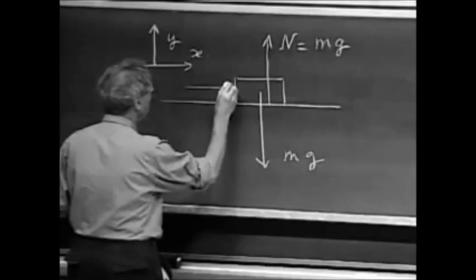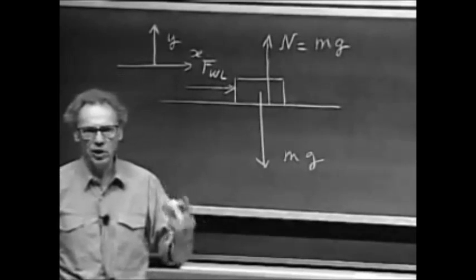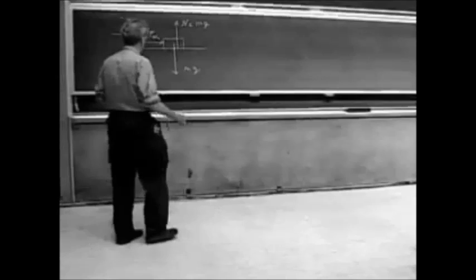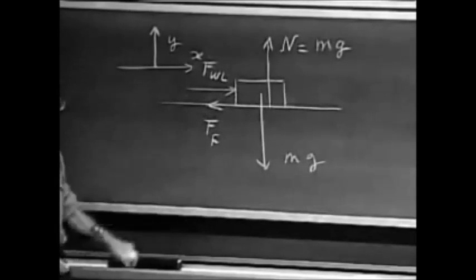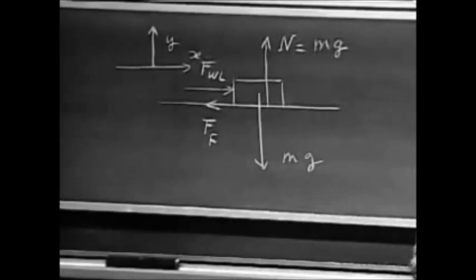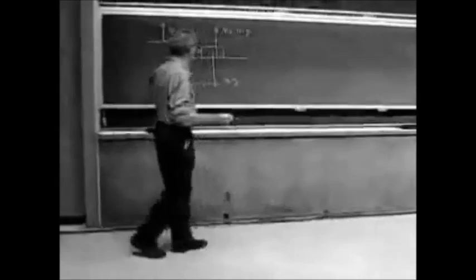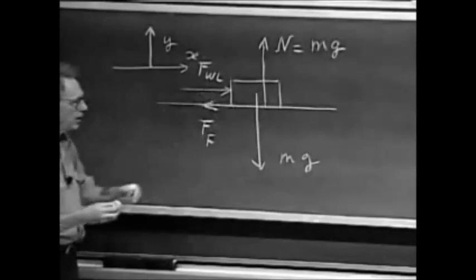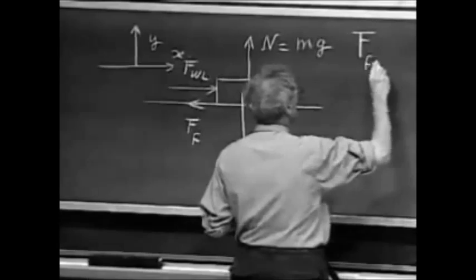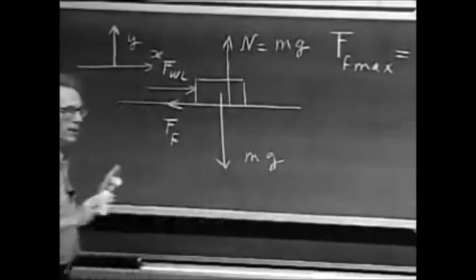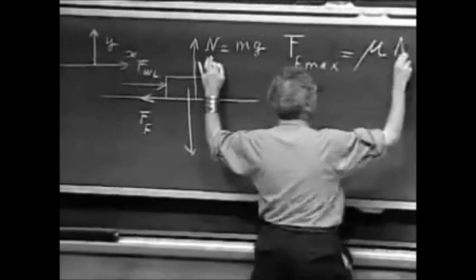Now I am going to push on this object with a force. We know that the object in the beginning will not start accelerating. That is only possible because there is a frictional force which adjusts itself to exactly counter my force. I push harder and harder, and there comes a time that I win. The object begins to accelerate. It means that the frictional force, which is growing as I push harder, reaches a maximum value which it cannot exceed. That maximum value that friction can achieve is what's called the friction coefficient mu, which has no dimension, times the normal force.